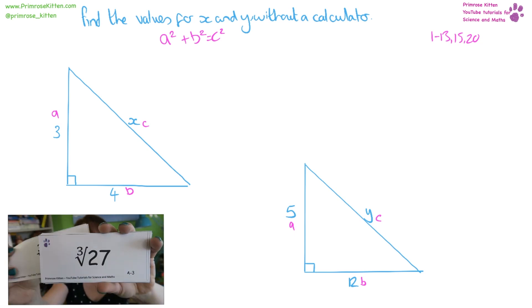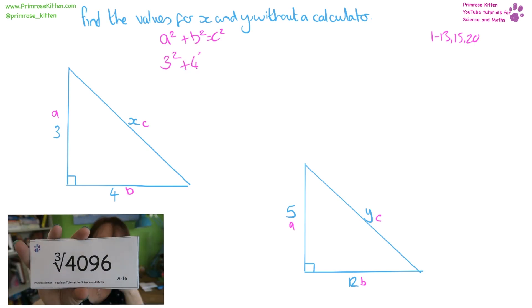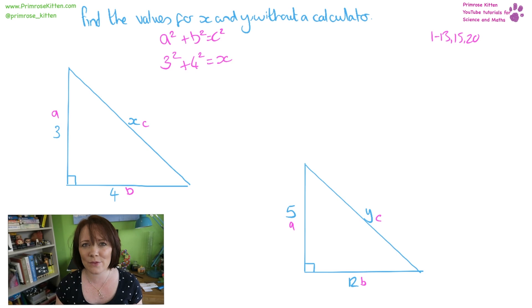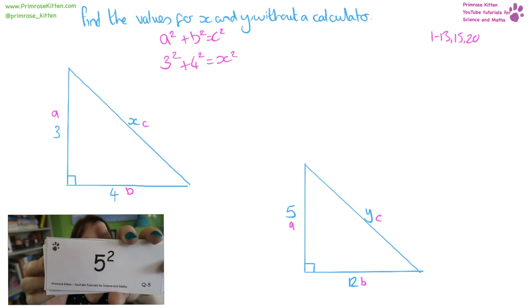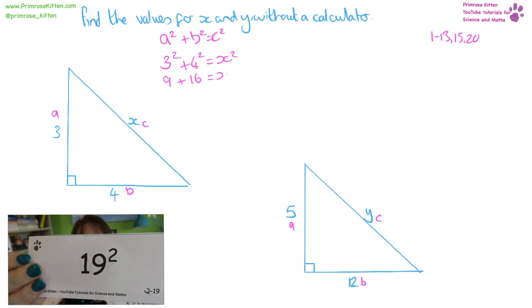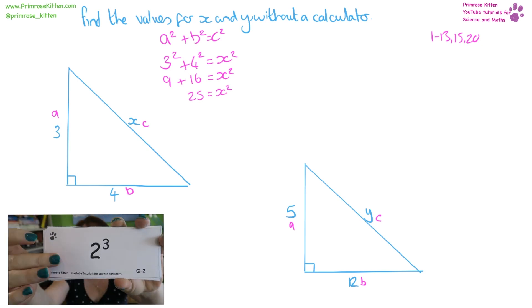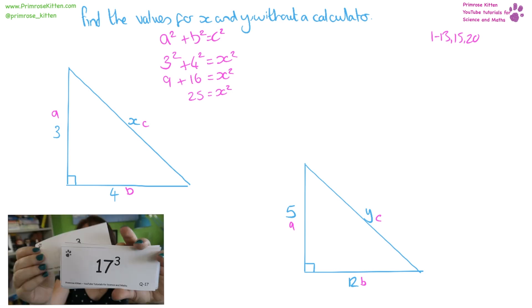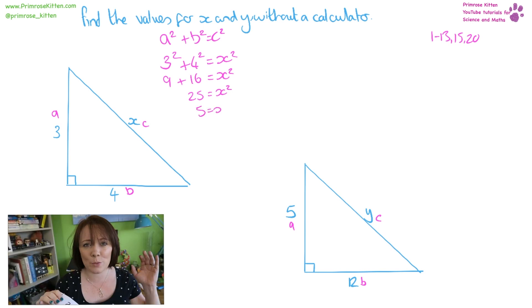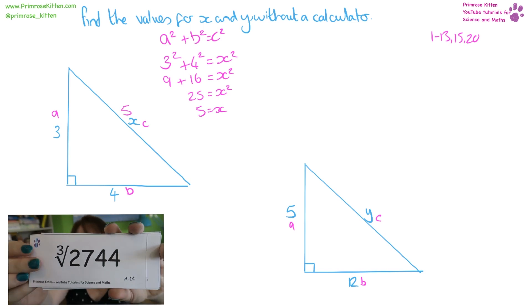So let's have a go at doing the first one. We have 3 squared plus 4 squared equals x squared. 3 squared is 9, 4 squared is 16, that equals x squared. 9 plus 16 equals 25. Square root of 25 and x squared gives us x equals 5. So we have 3, 4 and 5.